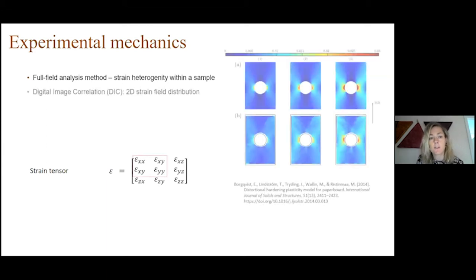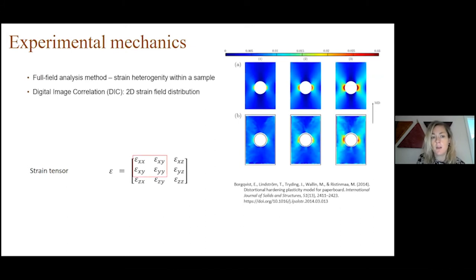This can be done in 2D or in 3D. Digital volume correlation is a 3D evaluation method where we can obtain the strain field distribution in a sample in 3D. We can obtain a full picture of what happens in the sample during loading.